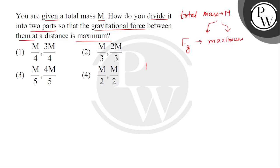Children, let us know that the object has mass capital M. Let us take one part which has mass value of small m. So, the remaining second part has mass value of capital M minus small m.